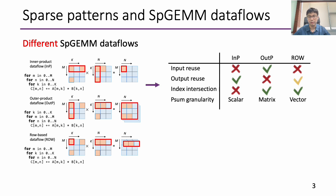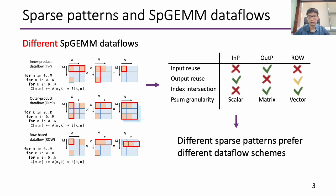For example, the outer product data flow has excellent input reuse, but its output reuse is poor. Besides, its partial sum granularity is large. Therefore, there is high performance improvement potential if we could adopt different data flow schemes with respect to different sparse patterns. Unfortunately, none of the previous works explores such possibility.